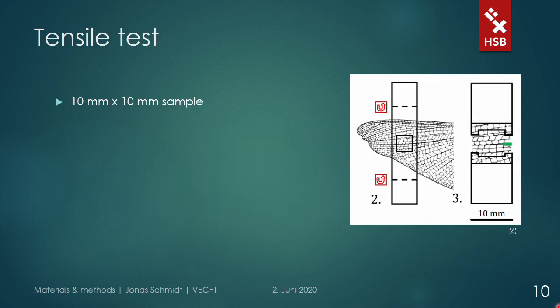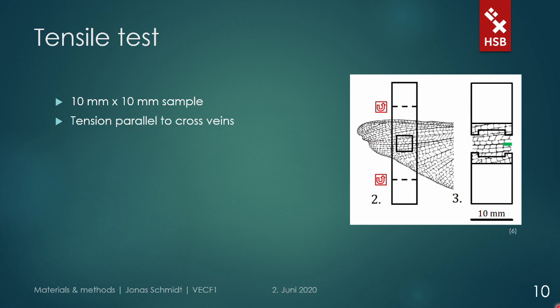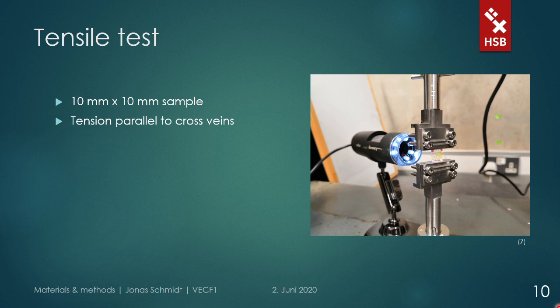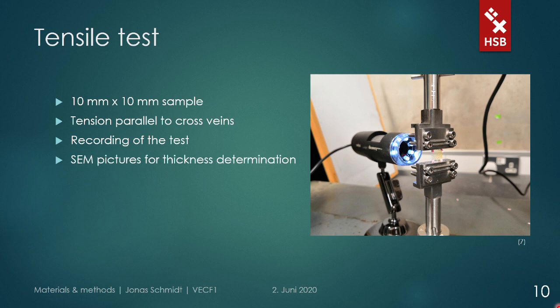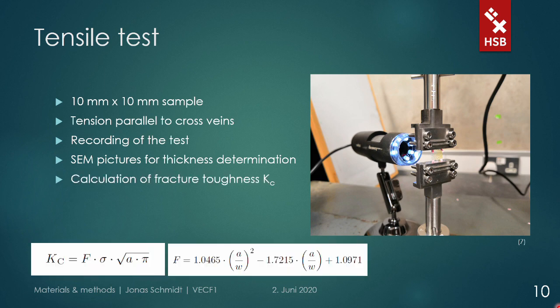In detail, 10×10 mm samples were tested in the same manner as previously shown in the video with a pre-induced initial crack, indicated here by the green line. A constant displacement was applied with the load direction approximately parallel to the cross veins until complete failure occurred due to crack propagation. To match the crack propagation with the applied displacement and to model the vein pattern, the tests were recorded using a USB microscope. The samples were preserved and analyzed with an electron microscope to determine the thickness of the membrane as well as the vein dimensions. The fracture toughness was calculated using a standard equation with the geometrical correction factor f.